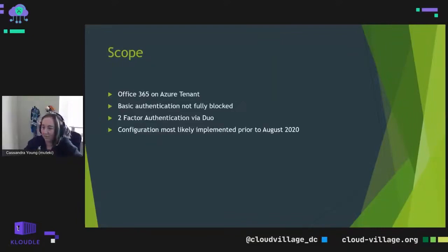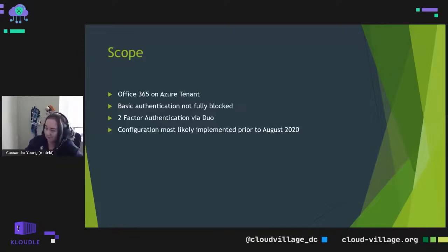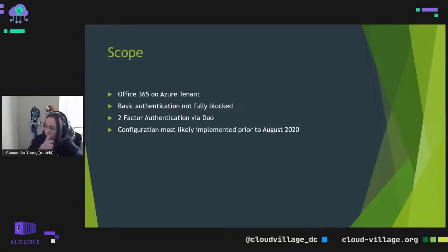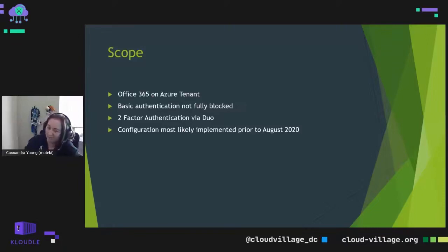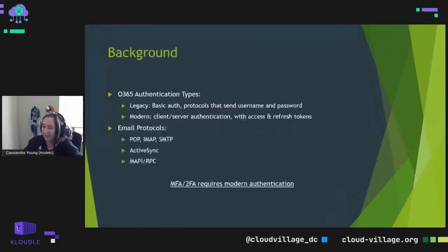I'm going to talk a little bit about what the scope of this actually is. This applies to Office 365 on an Azure tenant on which all basic authentication is not fully blocked. This is happening on tenants where two-factor authentication or two-factor verification with Duo is implemented, and it applies to configurations most likely implemented prior to August 2020 or thereabouts.